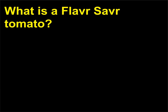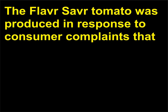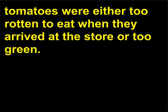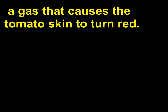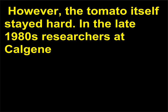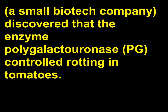What is a Flavr Savr tomato? The Flavr Savr tomato was produced in response to consumer complaints that tomatoes were either too rotten to eat when they arrived at the store or too green. Growers had found that they could treat green tomatoes in the warehouse with ethylene, a gas that causes the tomato skin to turn red. However, the tomato itself stayed hard. In the late 1980s, researchers at Calgene, a small biotech company, discovered that the enzyme polygalacturonase (PG) controlled rotting in tomatoes.